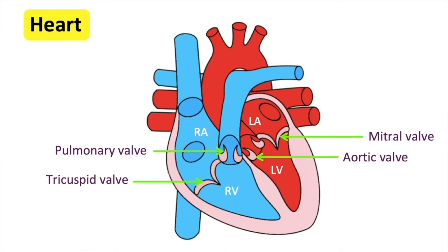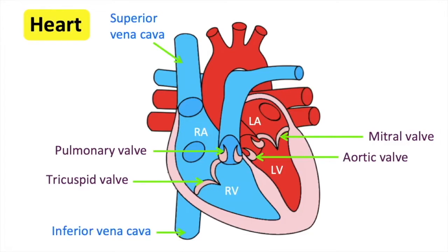It's important to remember that veins carry blood to the heart and arteries carry blood away from the heart. The superior and inferior vena cava are large veins that deliver deoxygenated blood into the heart.